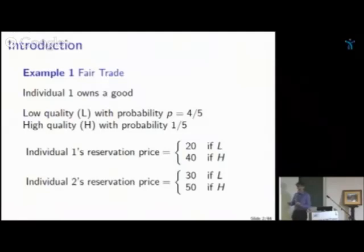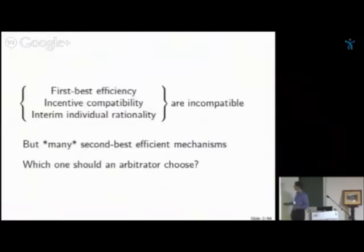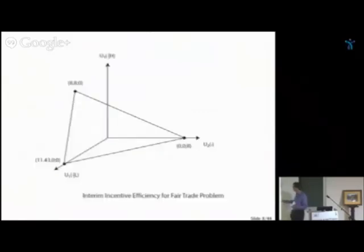First-best efficiency with incentive constraints — leading individual one to reveal his information truthfully — and interim individual rationality are incompatible. That's the Myerson-Satterthwaite result. So a big part of the literature is about impossibility results. There's another part saying there are still things that are feasible, so there are incentive-compatible contracts in this problem, and we define second-best efficiency.